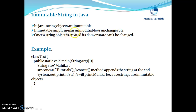In Java, string objects are immutable, which means that they are unmodifiable or unchangeable. Once a string object is created, its data or state can't be changed. Whenever we apply any operation on a string object, a new string object is created as a result of the operation, but the original string is never changed.